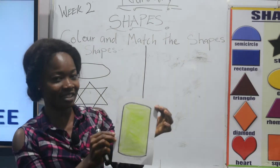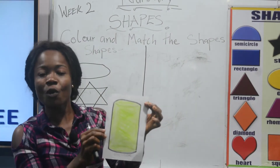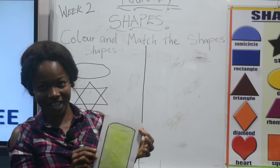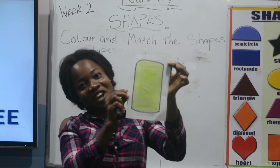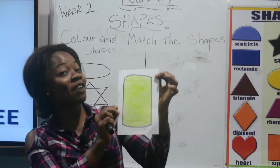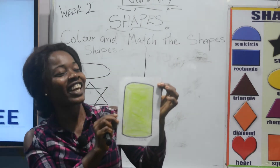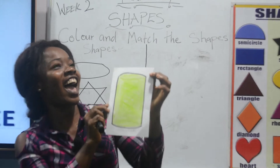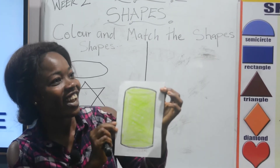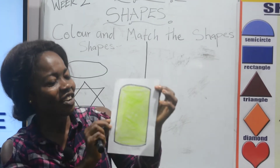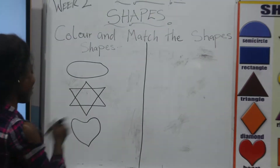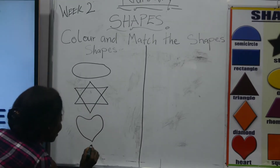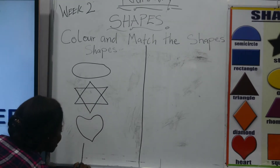Now we are moving on to another shape: cylinder. Repeat after me: cylinder. Again. Very good, you have done well. Wonderful kids!